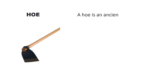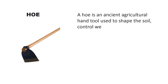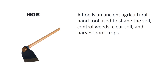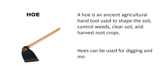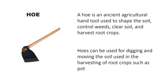A hoe is an ancient agricultural hand tool used to shape the soil, control weeds, clean soil, and harvest root crops. Hoes can be used for digging and moving the soil, and are used in the harvesting of root crops such as potatoes.